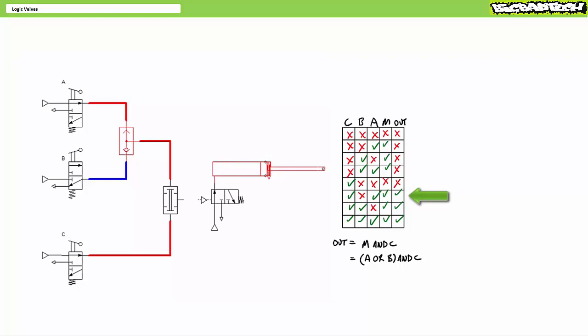With no signal at B and signal at C, A, the system yields output. With no signal at A, a signal at C and B, the system yields output. Finally, with signal at CBA, the system yields output.